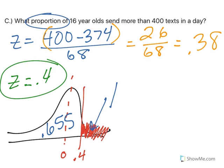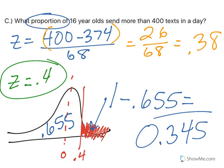So to find the area to the right, I subtract that from 1 because 1 represents all the area under the curve. And I end up with 0.345. So 34.5% chance of finding somebody who sends more than 400 texts in a day.